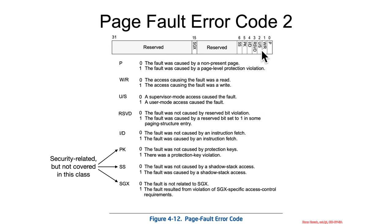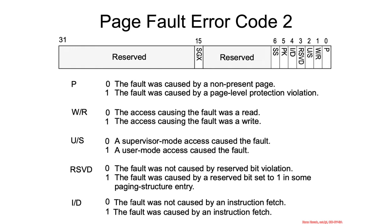This is the format of the page fault error code. There are some bits that pertain to security that we haven't covered in this class, so I'm just going to hide those for the moment. What is the interpretation of the error code? If bit 0 is set to 0, then this was a page fault caused by a non-present page. If instead it was 1, then there was some sort of protection violation, such as attempts to write to a read-only page or attempts to execute something that's non-executable. The RW bit is further information to tell you if this was a protection violation — was it due to a read or a write? US is telling you whether it was user mode or supervisor mode causing the fault.